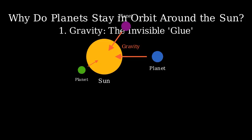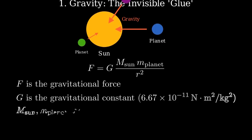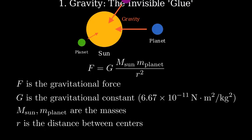Newton formulated this relationship mathematically. The gravitational force between two objects equals the gravitational constant G, multiplied by the masses of the objects, divided by the square of the distance between them. In this equation, F is the gravitational force. G is the universal gravitational constant with a value of 6.67 times 10 to the negative 11 newton meters squared per kilogram squared. M_sun and M_planet are the masses of the sun and the planet respectively, and r is the distance between their centers.